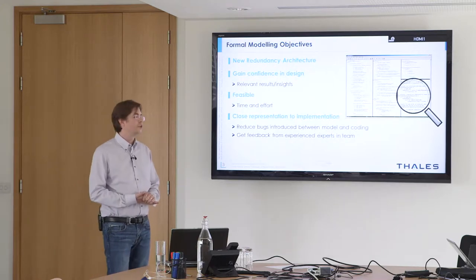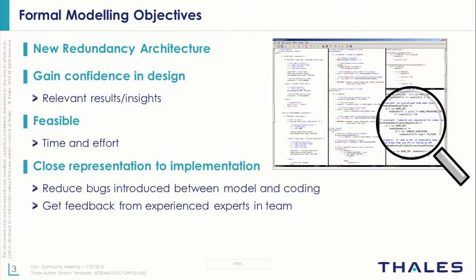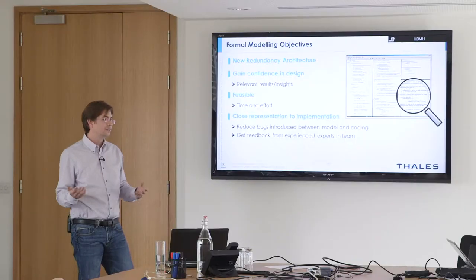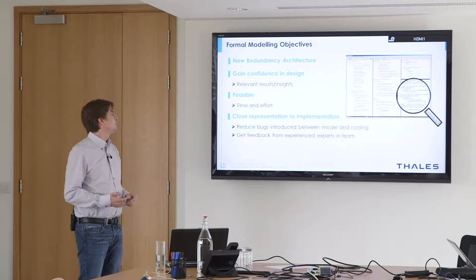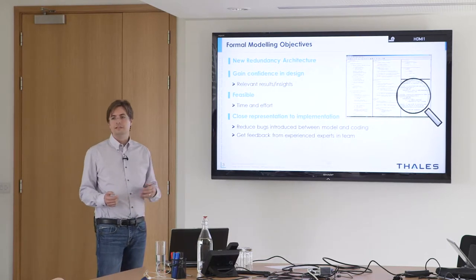For the new version, we have a new redundancy architecture that's a bit different from the others. We thought we should make sure the algorithms in there are sound, they work, they're correct. The idea was to use formal methods to check whether they are good — mainly to gain confidence in the design and to ensure all the corner cases are covered, things you can never think of as a human.